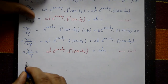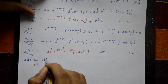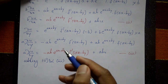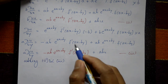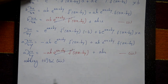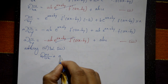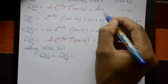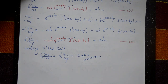Adding equation two and equation three: the f′(ax−by) terms have opposite signs and cancel out. Therefore b·∂u/∂x plus a·∂u/∂y equals 2abe^(ax+by)·f(ax−by), which equals 2abu. This is the required answer.